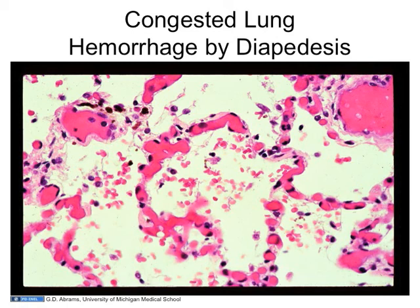You'll notice numbers of red cells out here in the air spaces. They've been pushed out passively — with this very delicate capillary network and tremendous increase in hydrostatic pressure from passive congestion, these red cells get forced out. This is sometimes referred to as hemorrhage by diapedesis. A patient with acutely congested lungs will actually cough up a little bit of pink-tinged stuff. That can happen very acutely. On the other hand, there are hundreds of thousands of people at any time who are in chronic heart failure, and they'll have chronic congestion of various organs where permanent changes begin to occur.